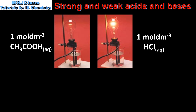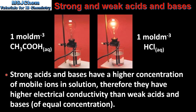As you can see, the bulb on the right is brighter than the bulb on the left. This means that hydrochloric acid is a better electrical conductor than ethanoic acid. Strong acids and bases have a higher concentration of mobile ions in solution. Strong acids completely ionize in solution whereas weak acids only partially ionize in solution. Therefore they have higher electrical conductivity than weak acids and bases of equal concentration.